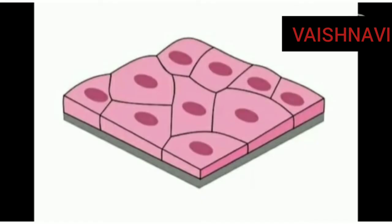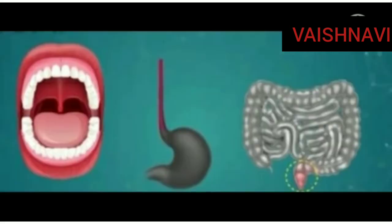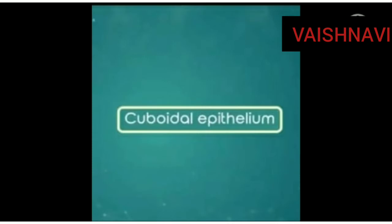First one is squamous epithelial tissue. It means multiple layers of squamous epithelial tissue. It is made up of thin, flat, delicate, compactly packed and irregularly shaped cells. Squamous epithelial tissue is present in the lining of the mouth, anus, etc.